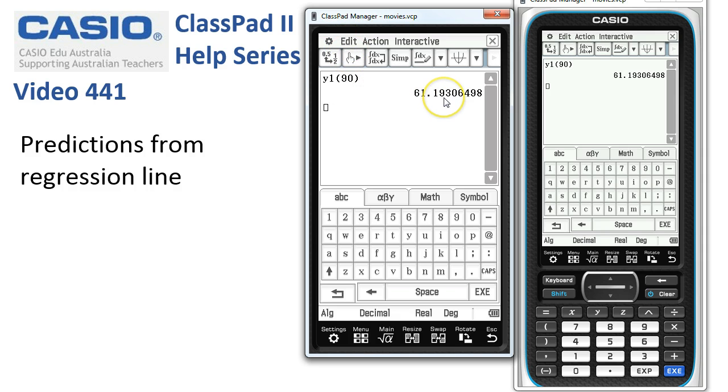And 61.19 is our prediction. To do any more predictions, we can simply take a copy of it down. Maybe we're interested in 40, execute, and so on. It's a very quick way to get and record the predicted values.